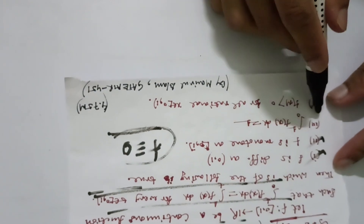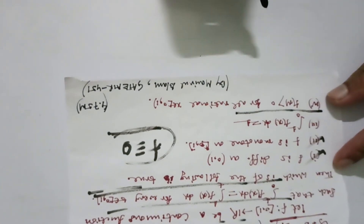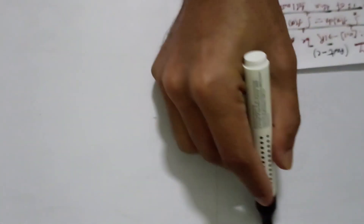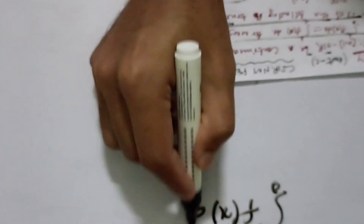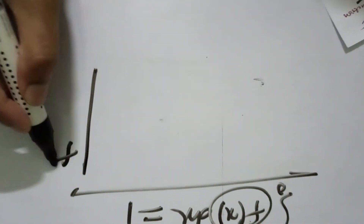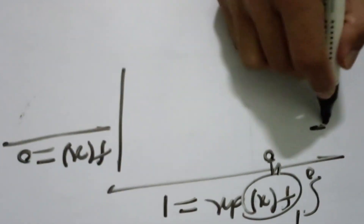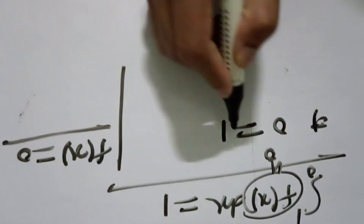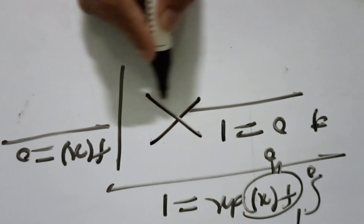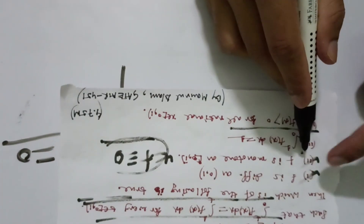Now the third option says ∫₀¹ F(x)dx = 1. Is this true? No. We have proved the function satisfying the given condition must be the zero function, F(x) = 0. If we put F(x) = 0, then the left side equals 0, but the right side is 1 — a contradiction. So option 3 is not correct.